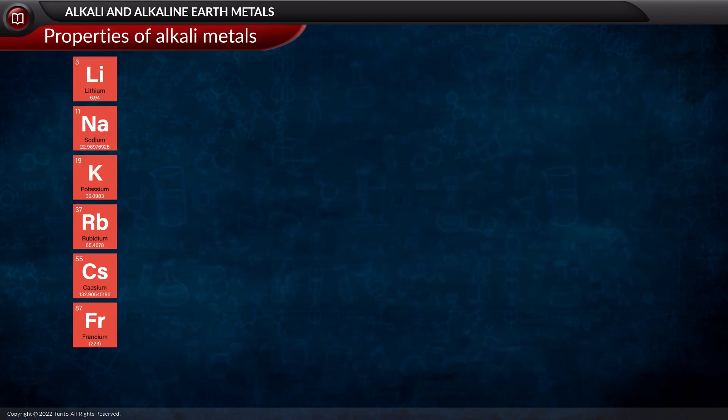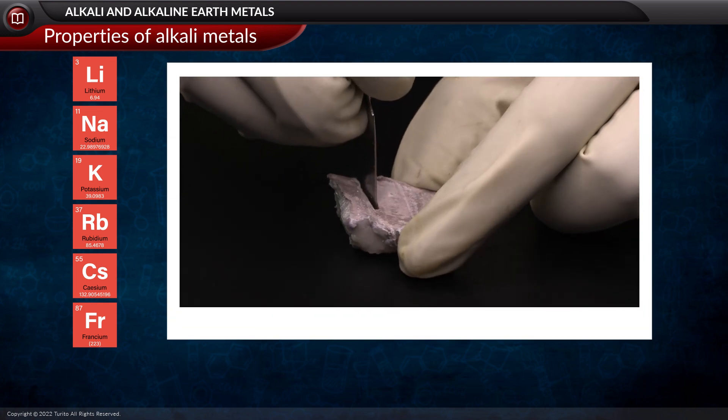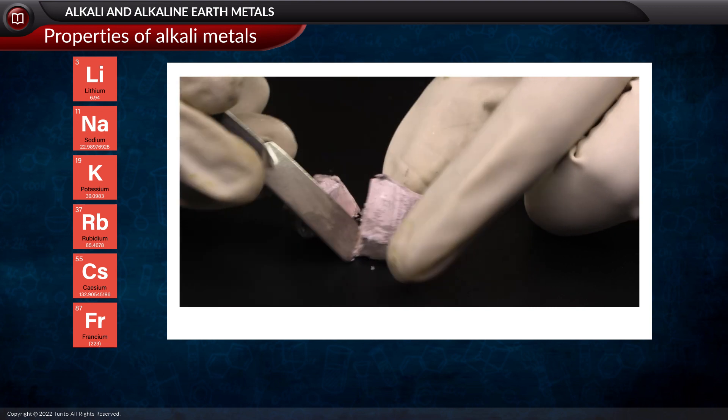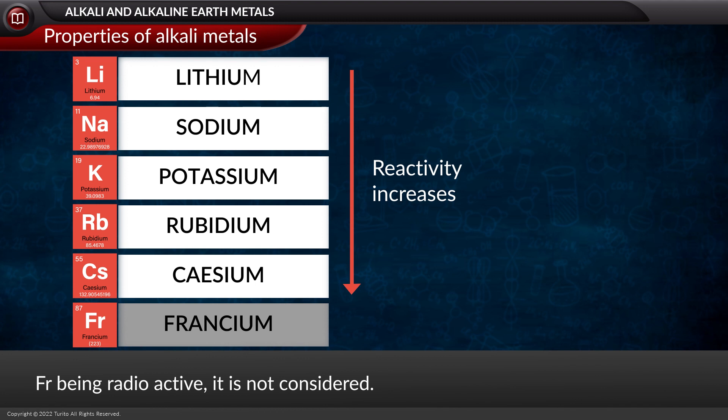So what are the properties of alkali metals? Alkali metals are soft due to the weak metallic interaction which is present in the crystal. Alkali metals are highly reactive and the reactivity increases as we go down the group. Thus cesium, being the last element of this group, is of the highest reactivity.